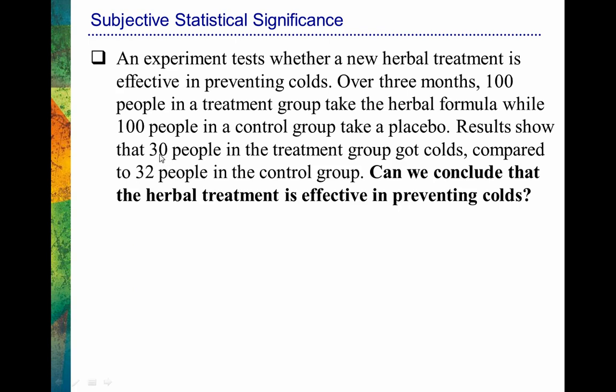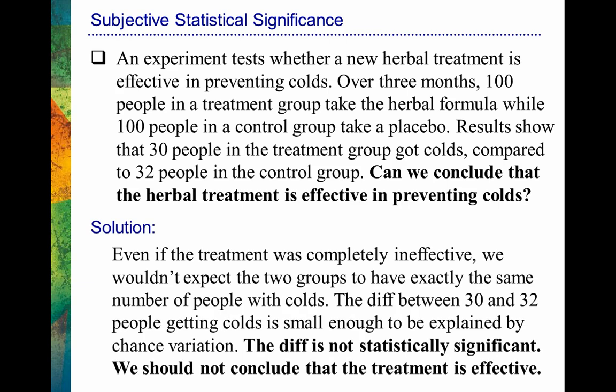We're looking at 30 people in the treatment group getting colds — that is less than 32 people in the control group. But that's probably not very impressive. It's hardly a compelling story about this herbal formula preventing colds. I would expect this type of difference to occur just by chance, even if this treatment has no effect at all on reducing colds. Even if the treatment was completely ineffective, we wouldn't expect the two groups to have exactly the same number of people with colds — that's just due to chance variation. The difference between 30 and 32 is small enough to be explained by chance variation. The difference is not statistically significant, and we would not conclude that the treatment is effective.